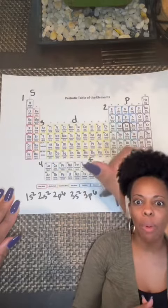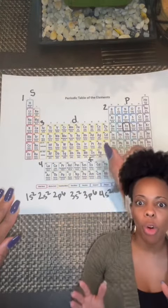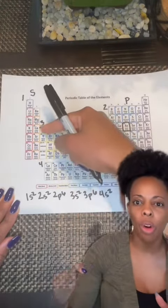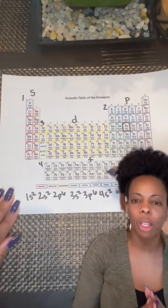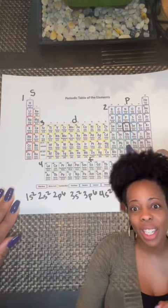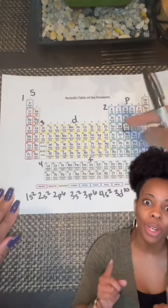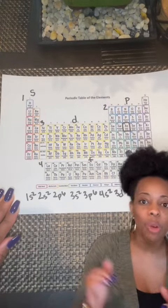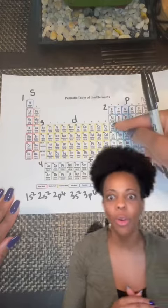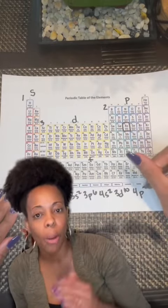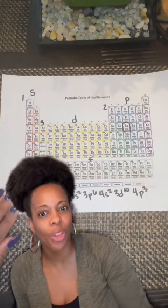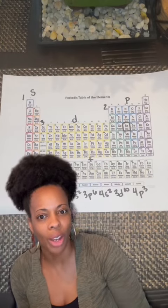Then wrap back around, typewriter style. Write the number four. If we started at one, we're now at four. 4S2, count the columns. Now, when we enter that D subshell, we have to account for the fact that it starts on three. So you're going to write 3D10, and then we go back into the P sub level, and we would write 4P3, to account for the actual number of electrons that we've counted.